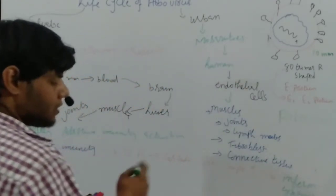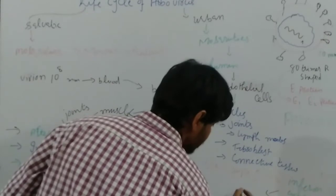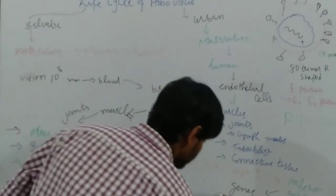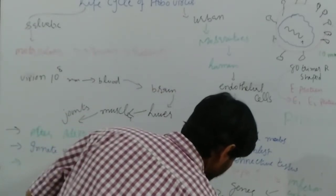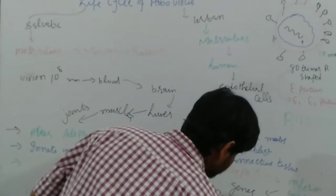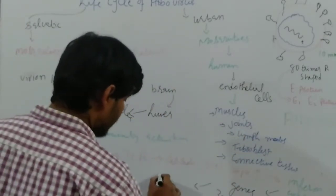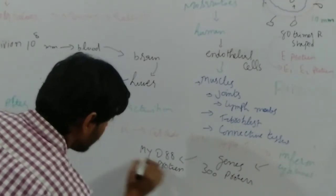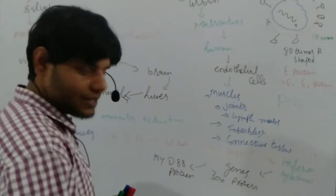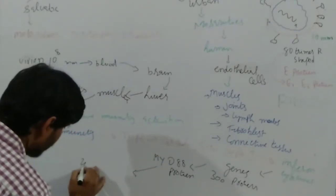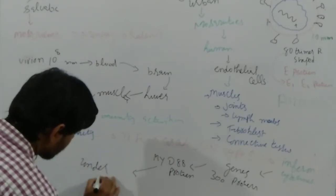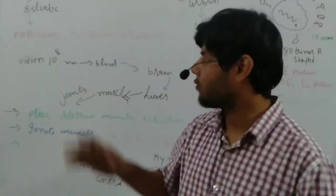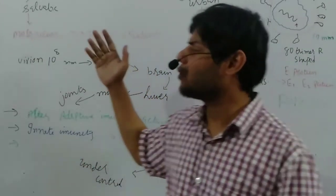Once these interferon cytokines are released, they will activate genes which usually code around 300 proteins. In this case, we have a protein called MYD88, which is actually the host defense protein. Once the host defense proteins are activated, the process comes under control.